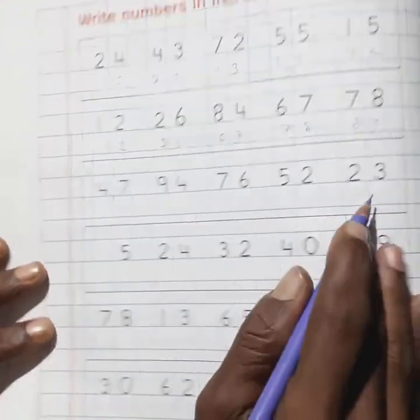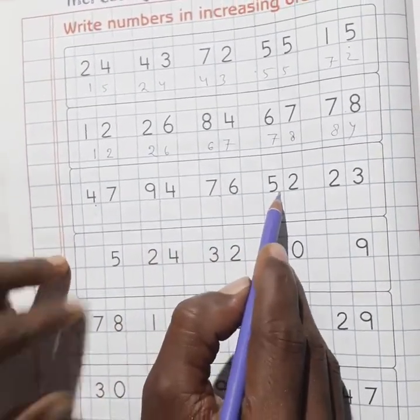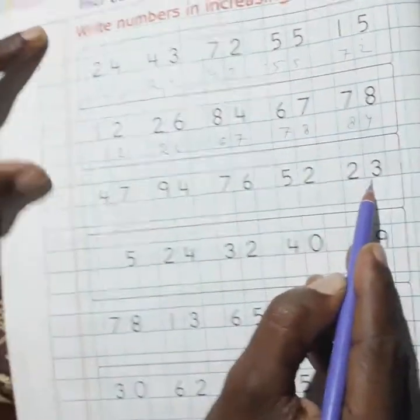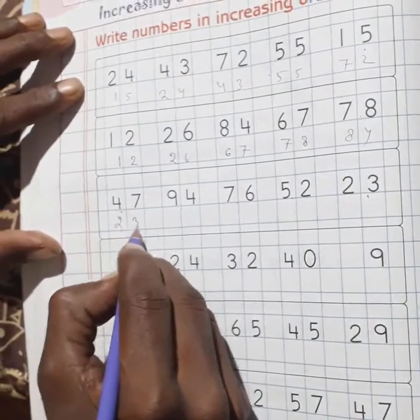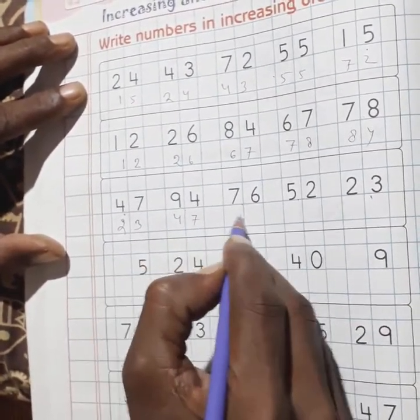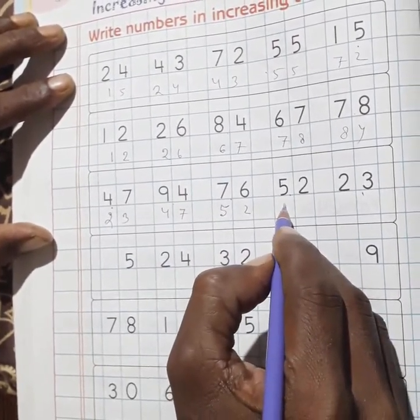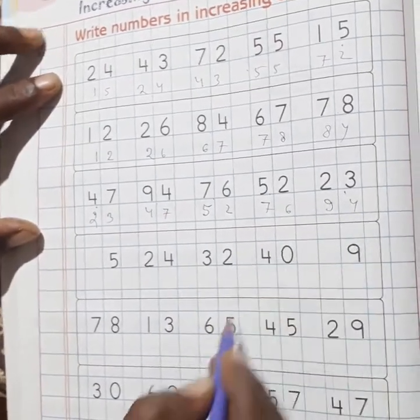Next question here, student. 47, 94, 76, 52, and 23. Student, here 23 is the least number, that means smallest number here. Now write at first 23, then 47, then 52, then 76, and then in the last 94.